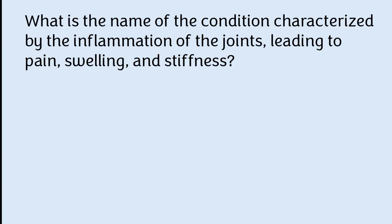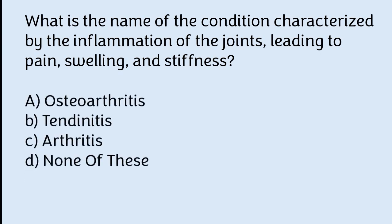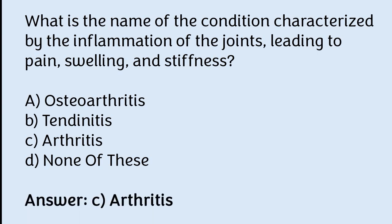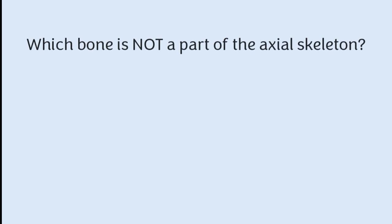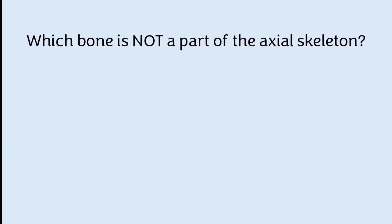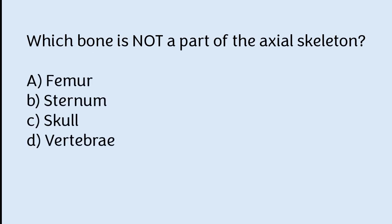What is the name of the condition characterized by inflammation of the joints leading to swelling and stiffness? Osteoarthritis, tendonitis, arthritis, or none of these. The correct answer is option C — arthritis. Which bone is not a part of the axial skeleton? Femur, sternum, skull, or vertebrae. The correct answer is option A — the femur is not part of the axial skeleton.